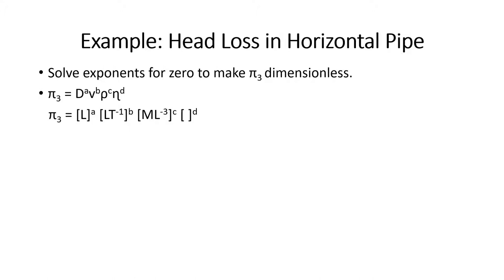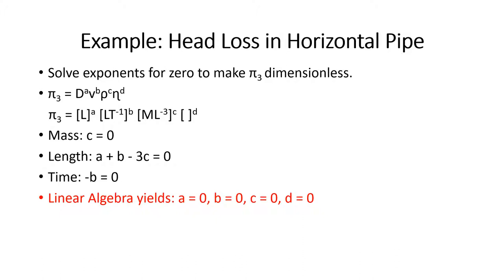For Pi three, the non-repeating variable is pipe roughness factor, which is itself a dimensionless quantity. Going through the steps: equating mass, length, and time exponents all gives zero, and all exponents for the repeating variables equal zero. No surprise — Pi three simply equals the pipe roughness factor. This is also why we couldn't pick pipe roughness factor as a repeating variable: it's dimensionless.